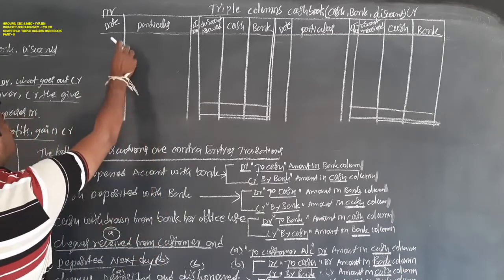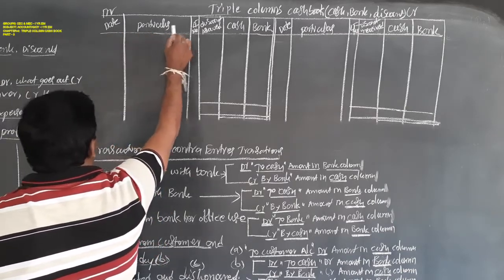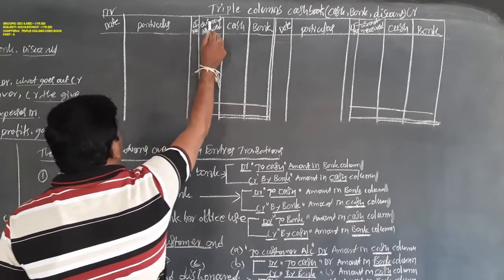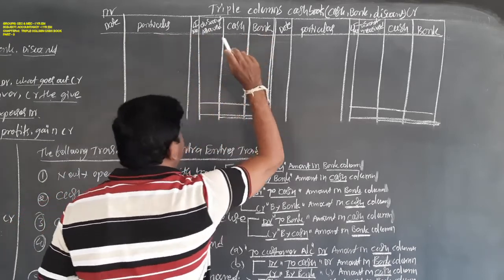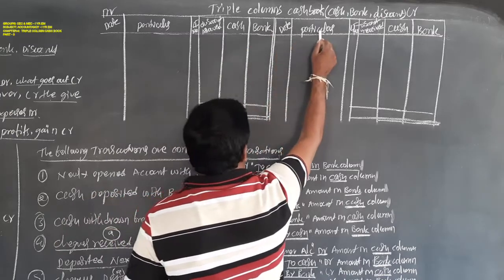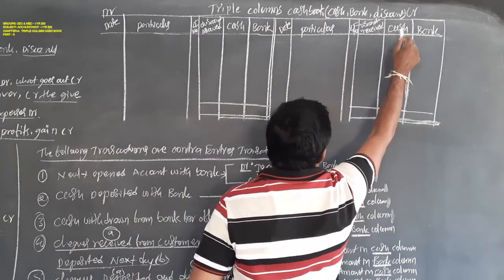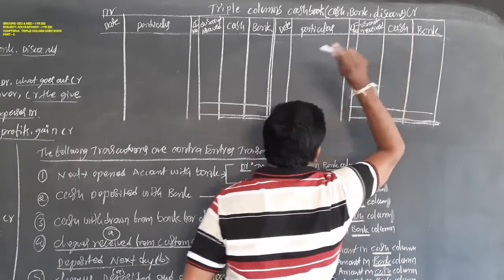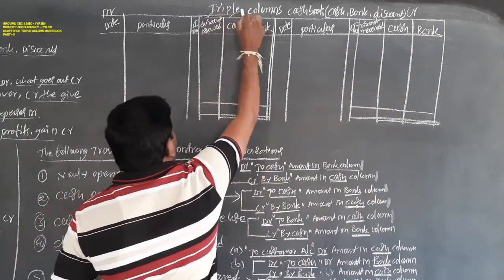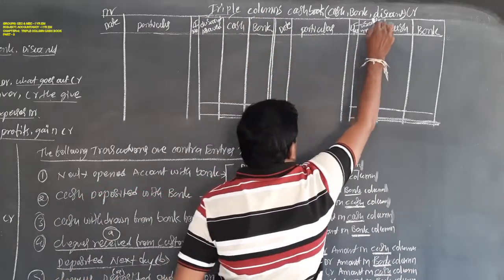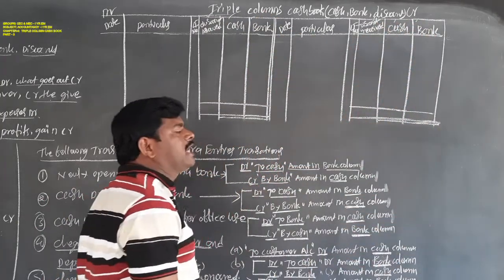The format of the triple column cash book includes: Date, Particulars, LF number, Discount Allowed, Cash, Bank on the debit side; and Date, Particulars, LF number, Discount Received, Cash, Bank on the credit side. Each side has three columns, so it is called the triple column cash book.